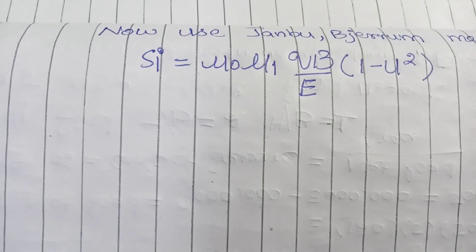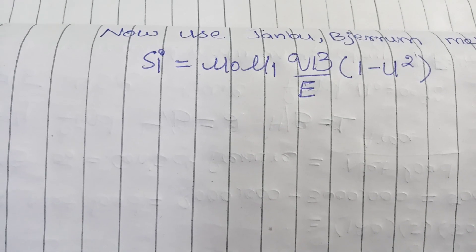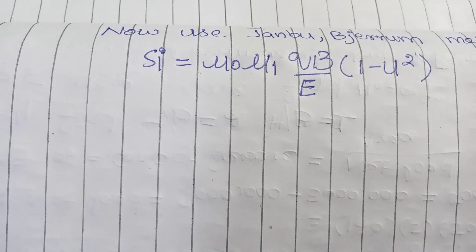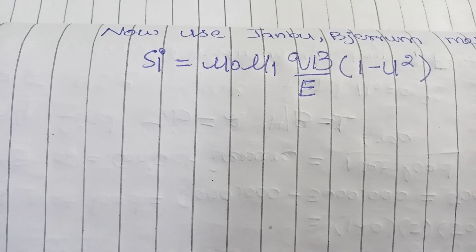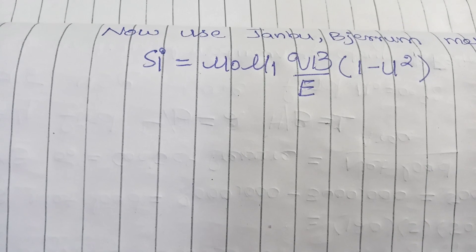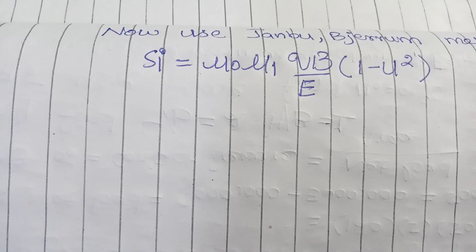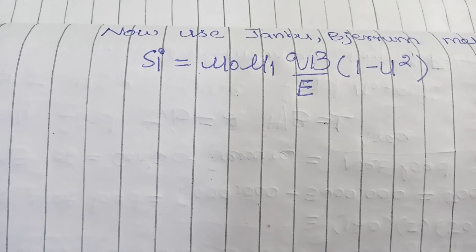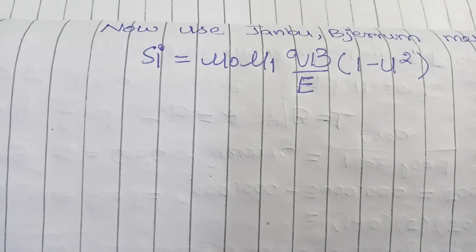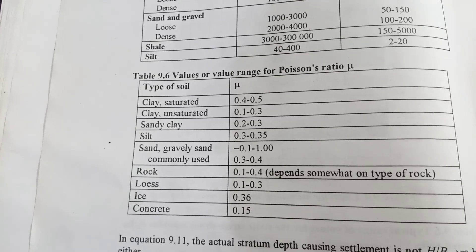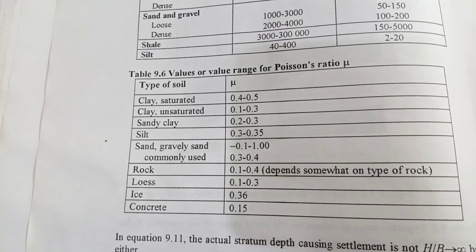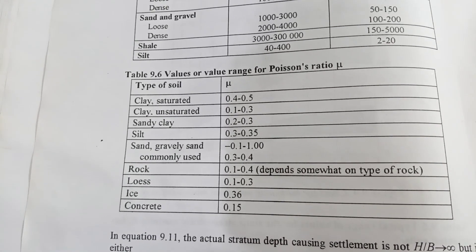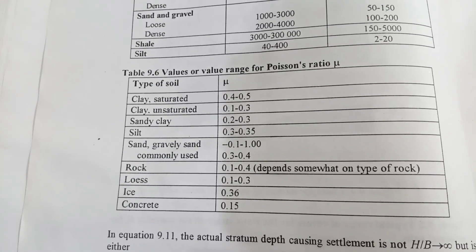So only Poisson's ratio is left. So let's see how we can find Poisson's ratio to complete this formula. After Poisson's ratio, we have all the values. So we put all the values in this formula. Then the final result is the immediate settlement of the foundation. Here you can see a table.